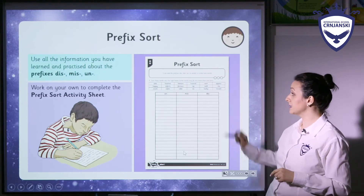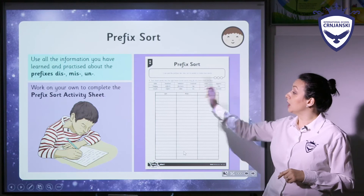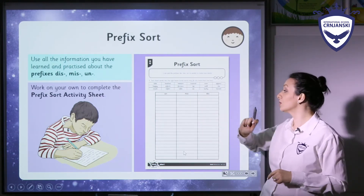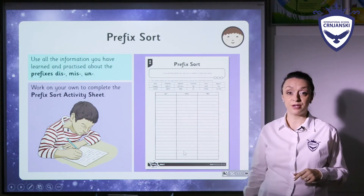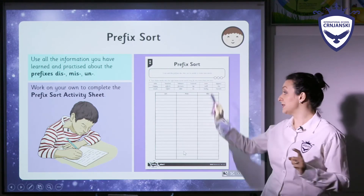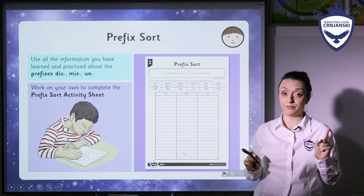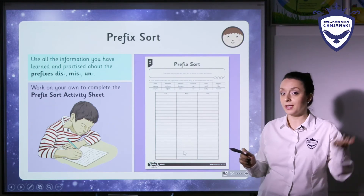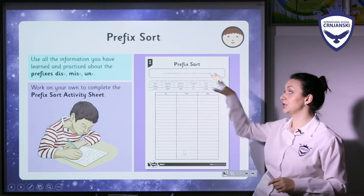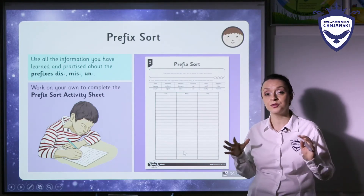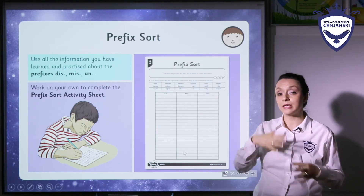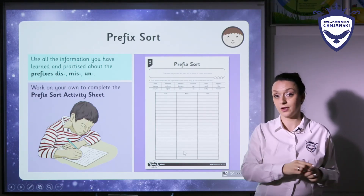For you to do — you have a task of prefix sort. These are the words that you're going to put with the correct prefix: un, mis, and dis. But pay attention — some of these words can have more than one prefix. Think about the meaning, because whenever we work with prefixes or suffixes, we have to know the meaning, so we can understand the new words we make.